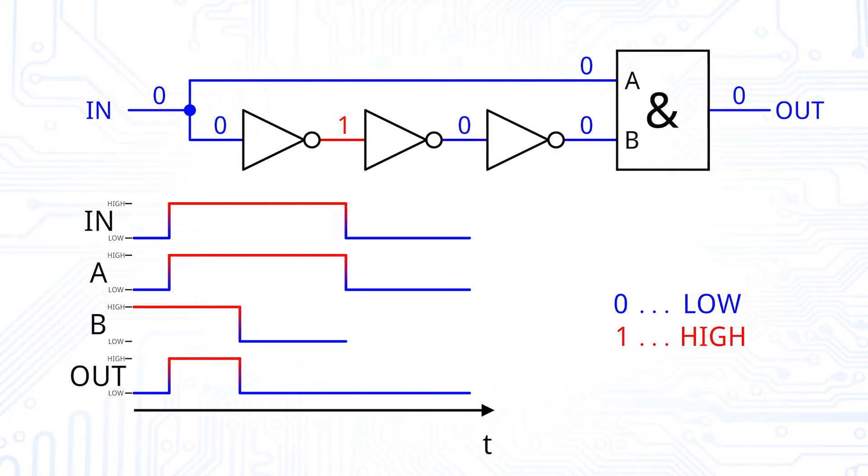So this monostable is sensitive to rising edges of the input. With this, we have examined our first monostable, where the low output corresponds to the stable state and the high output value corresponds to the unstable state. The pulse width of this monostable is defined by the sum of all inverter delays. Usually these inverter delays are in the range of nanoseconds, and therefore this monostable is only suitable to produce pulses of short width.